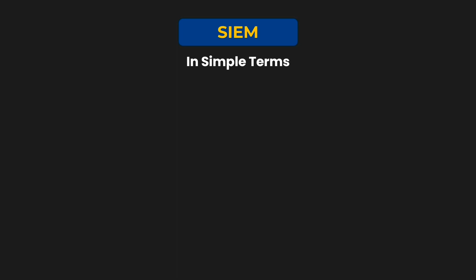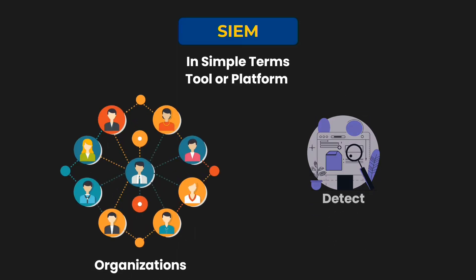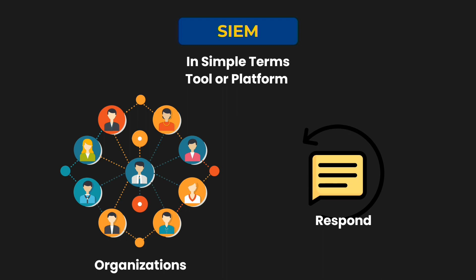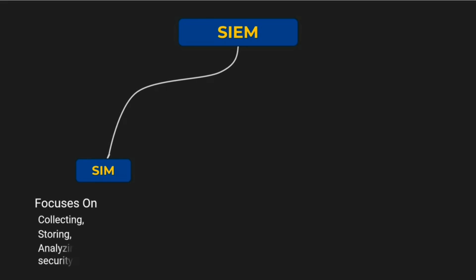So, what exactly is SIEM? In simple terms, SIEM is a tool or platform used by organizations to monitor, detect, and respond to security threats in real time. It combines two critical components. The first is Security Information Management, or SIM. This part focuses on collecting, storing, and analyzing historical security data like logs from firewalls, servers, and other systems.